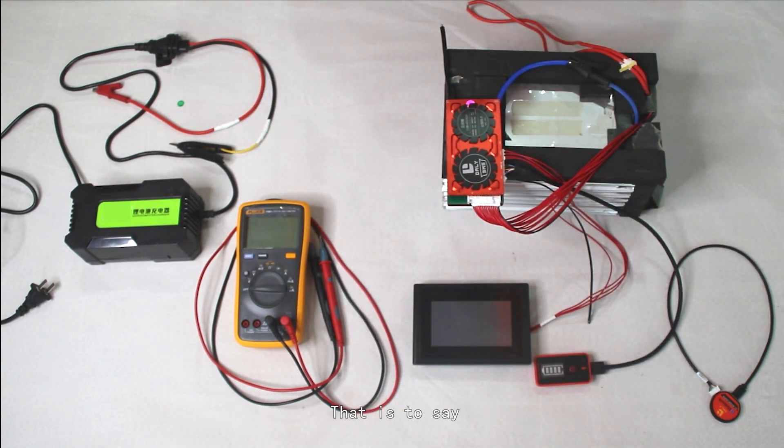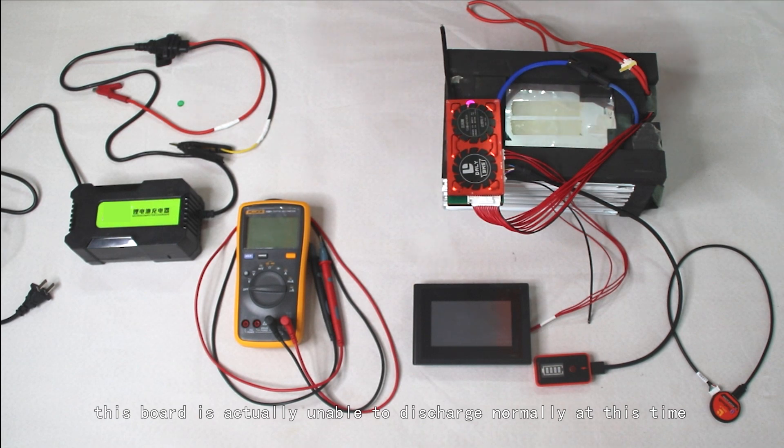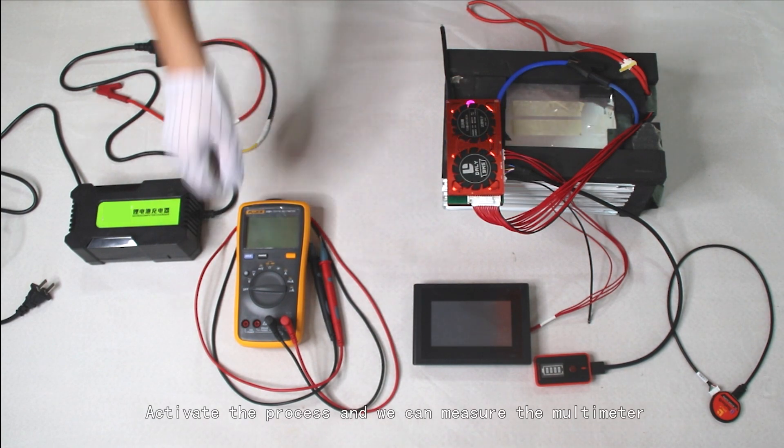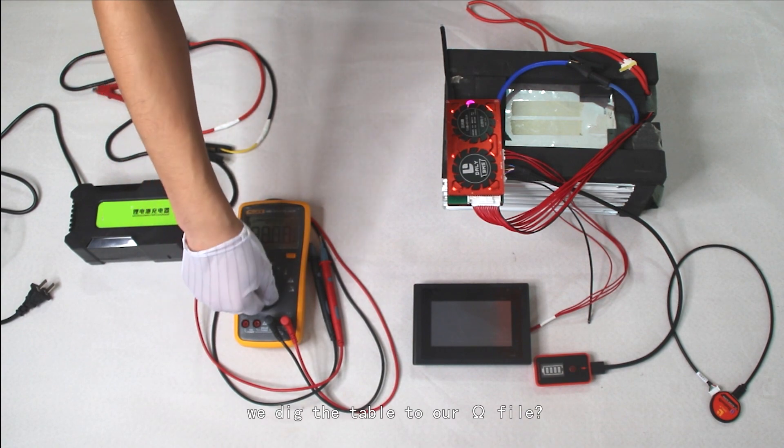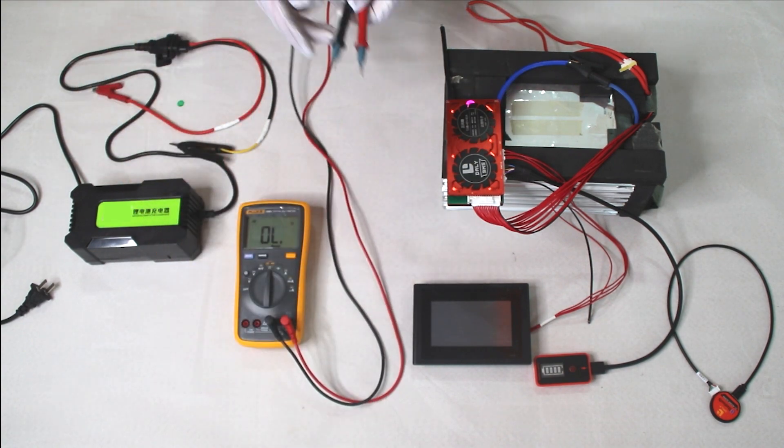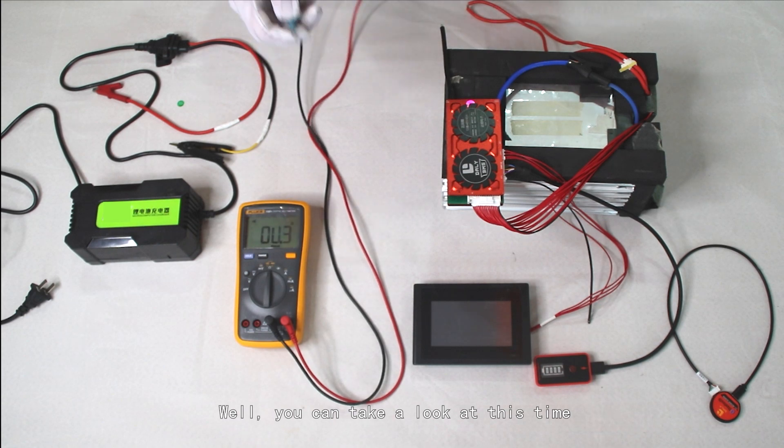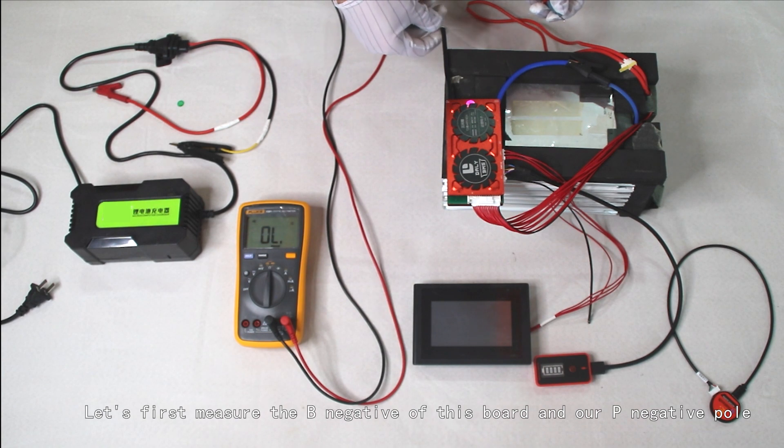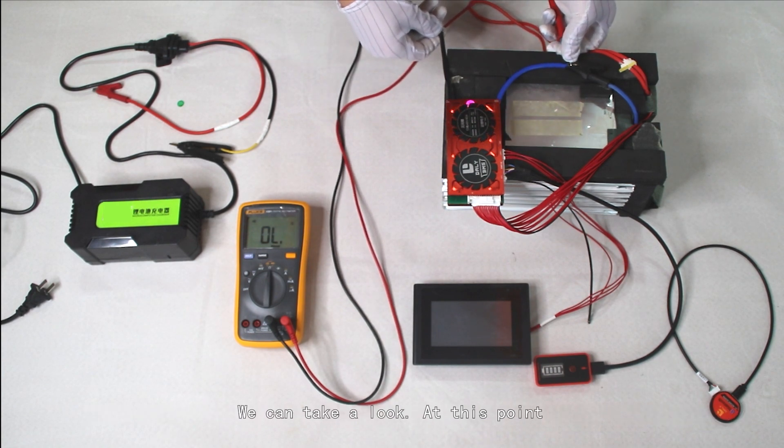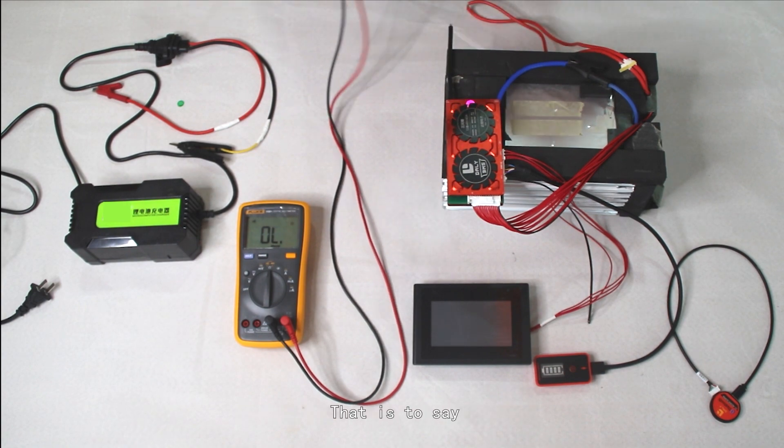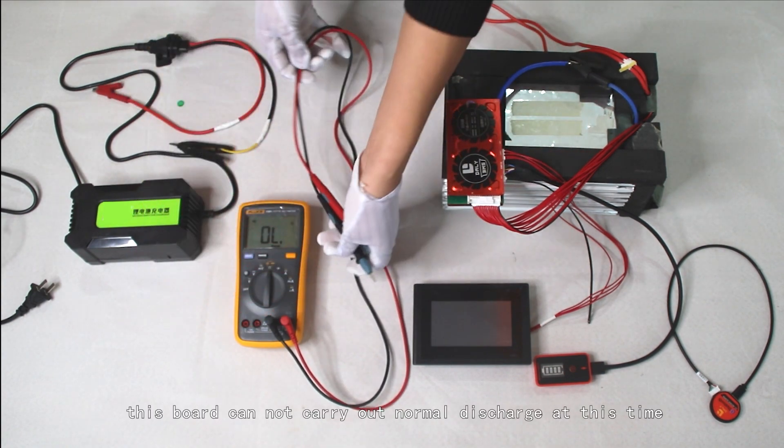This board is actually unable to discharge normally at this time because it still lacks the activation process. We can measure with the multimeter - set it to the ohm file. Let's first measure the B negative of this board and our P negative pole. You can see this board is not conductive - it cannot carry out normal discharge at this time.